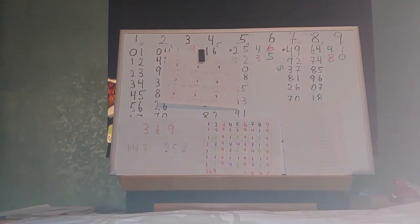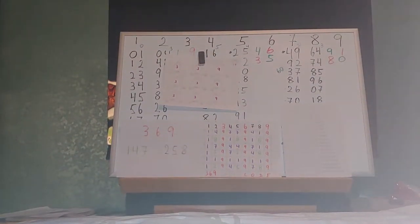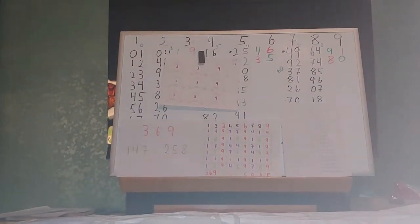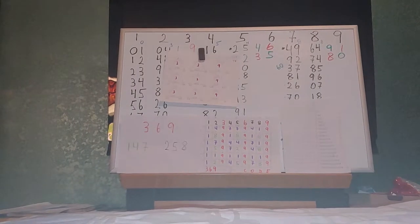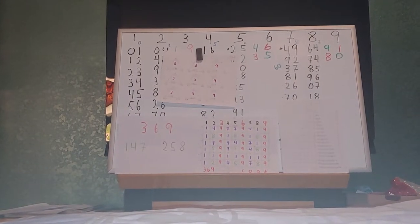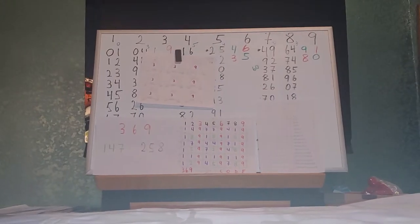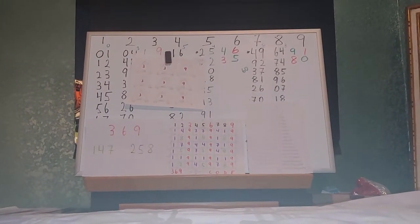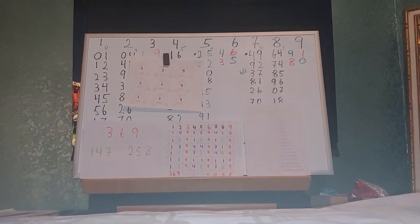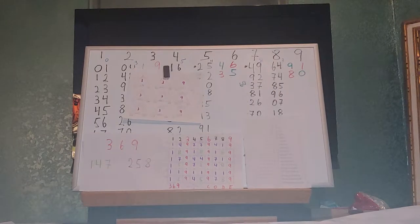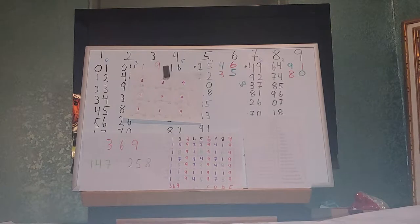Hello to all good people of the world. This is Paul Wittekin returning to you today with the Universal Law of Numbers. What we're doing is we're going to be squaring numbers to infinity. We're going to use the 369 code, and what we see on the board is the 369 code.